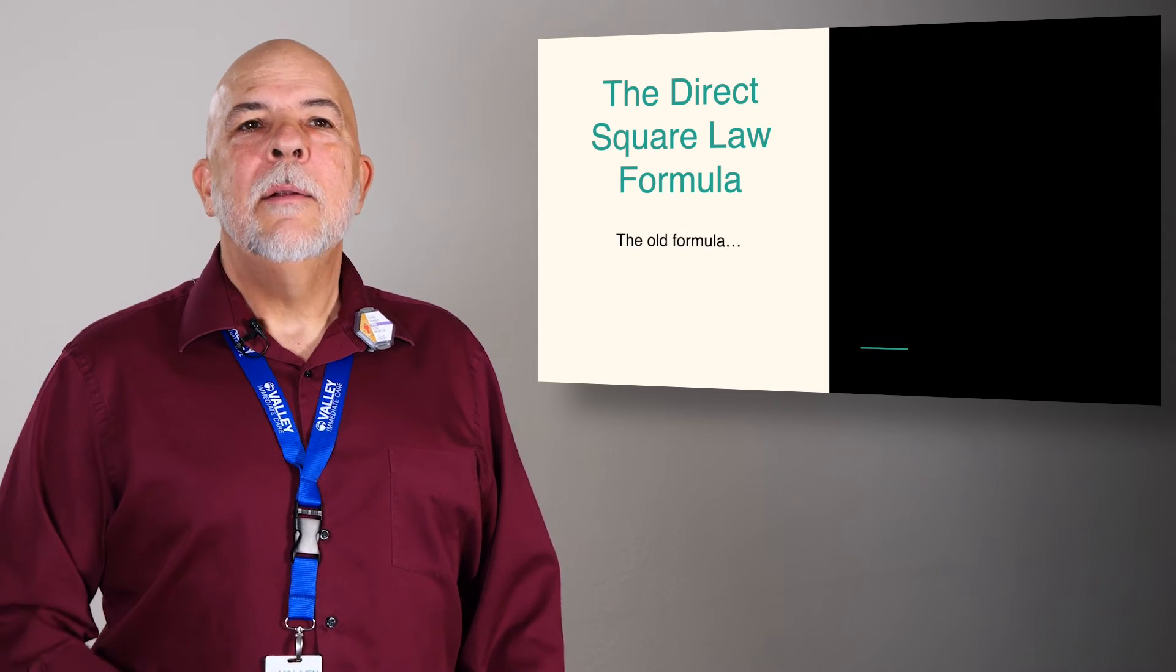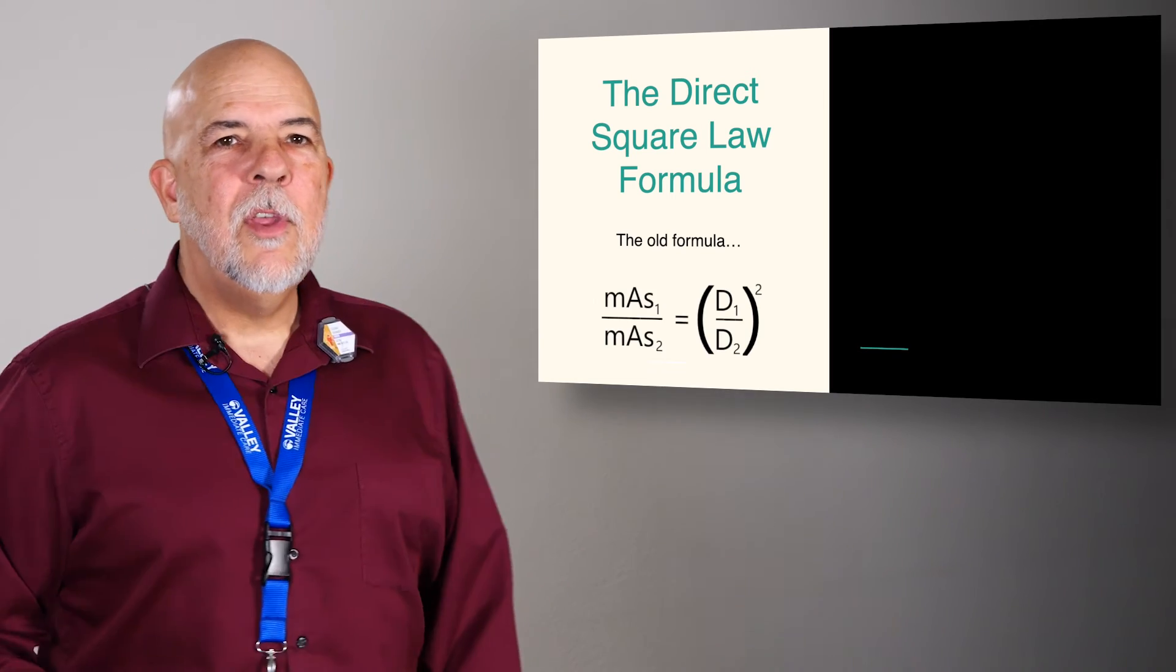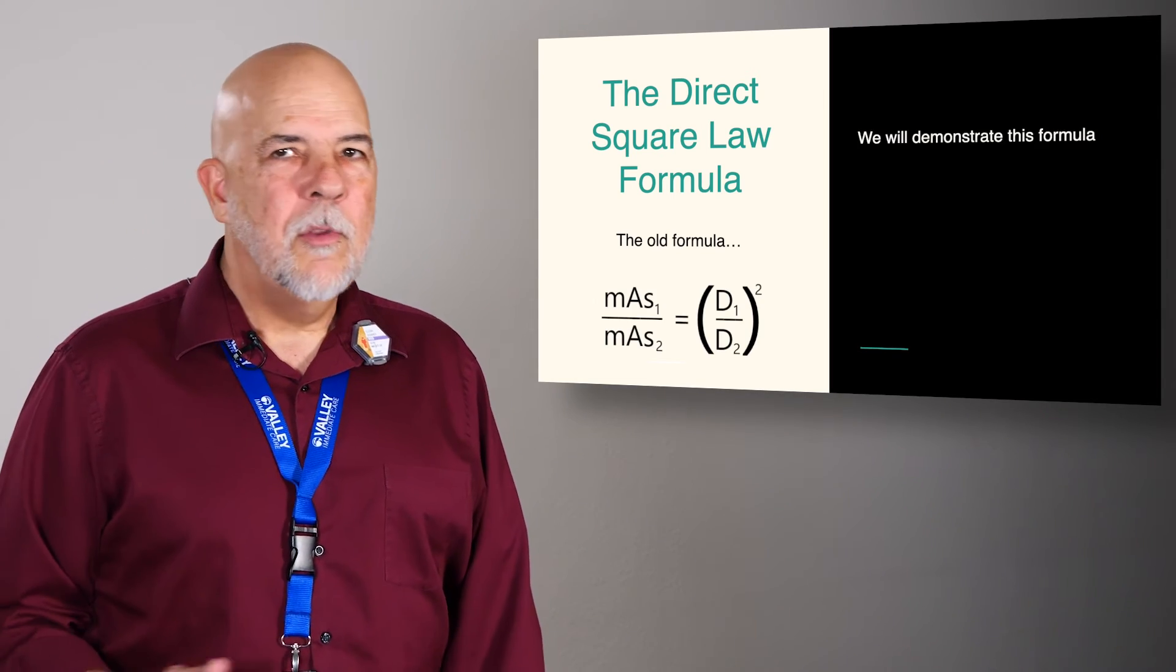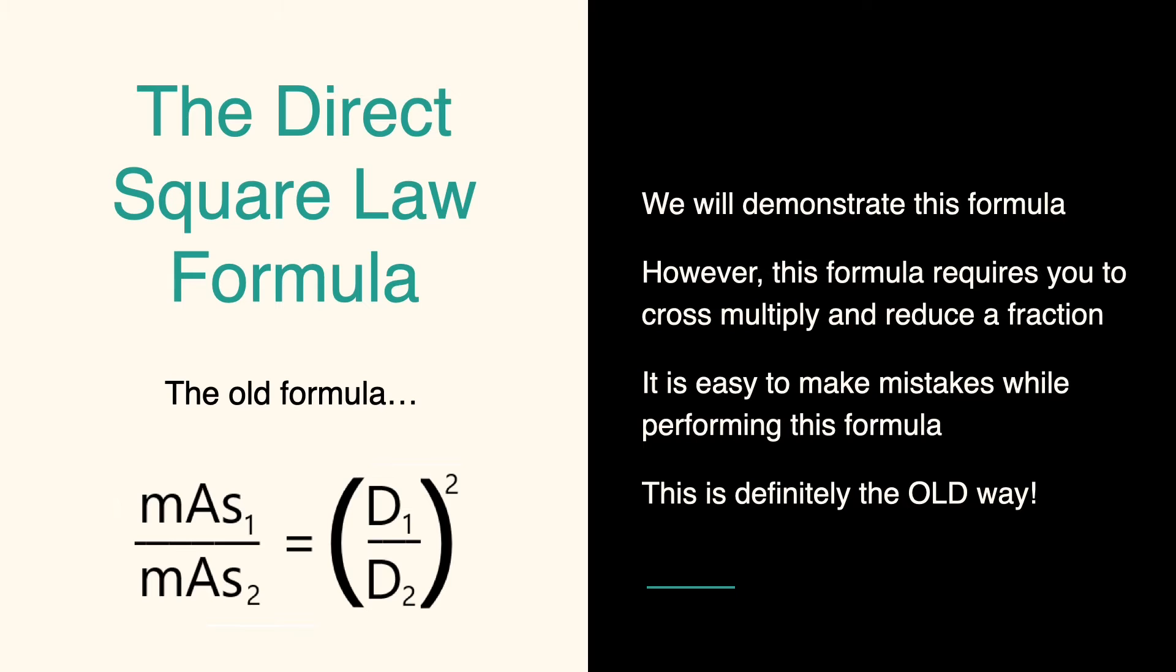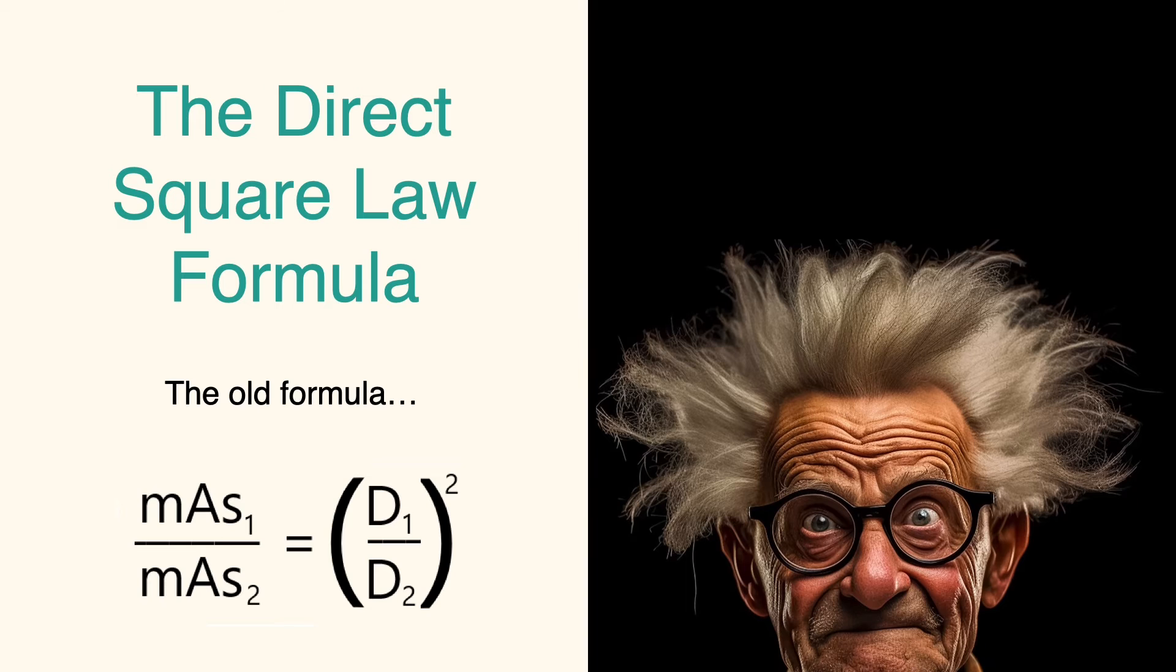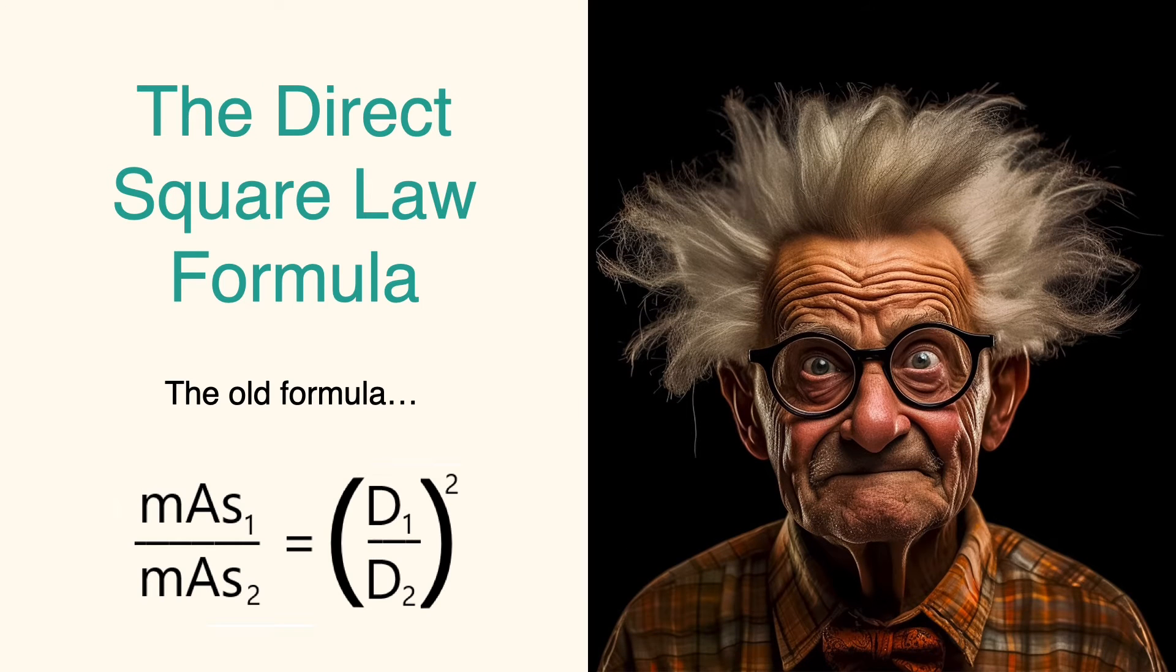The old formula, you can see here, we have to cross multiply and reduce a fraction and it's easy to make mistakes. So this is the old way. That was me when I still had hair.